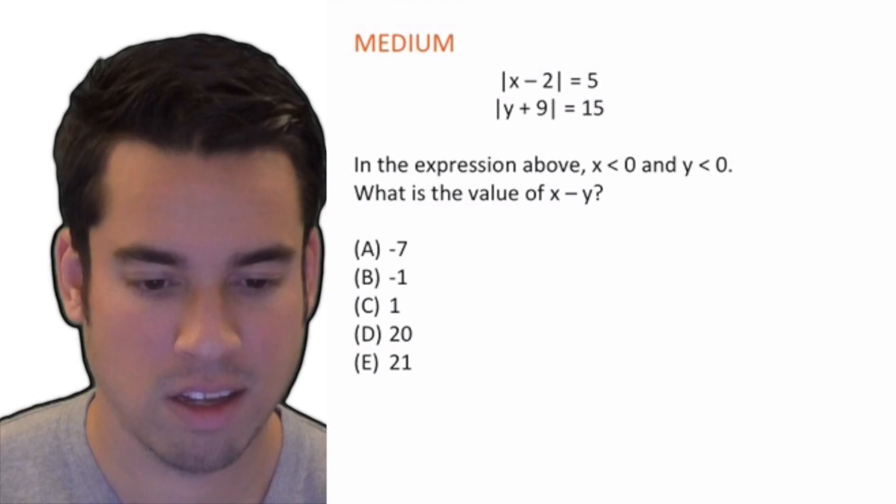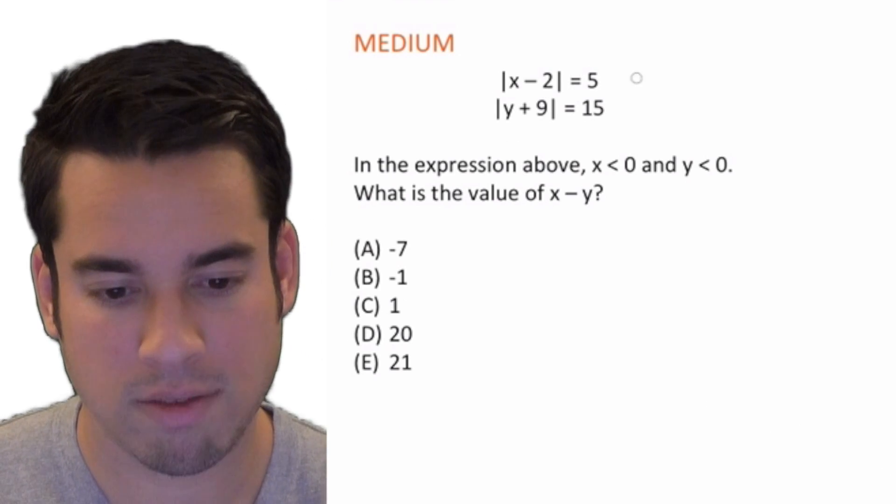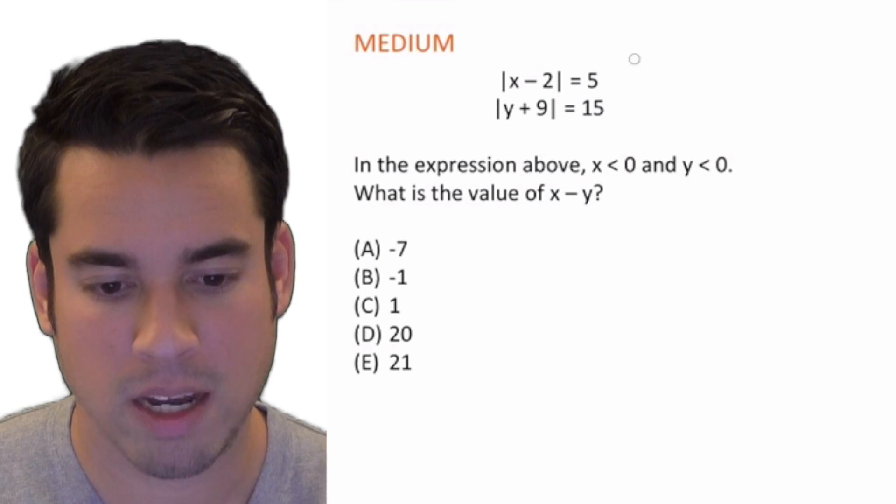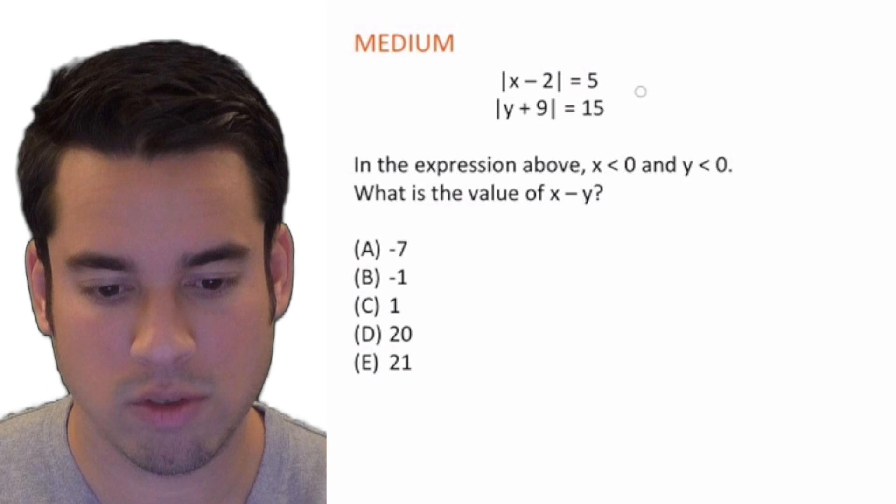Hey guys, welcome to absolute value practice problems, level medium. Alright, let's do it. So let's take a look here. We have two equations, two different variables: |x - 2| = 5 and |y + 9| = 15.